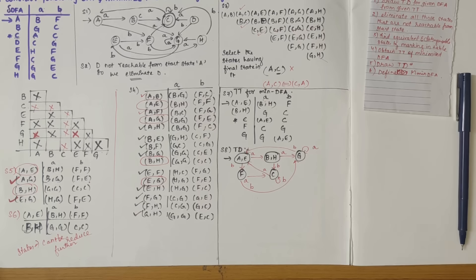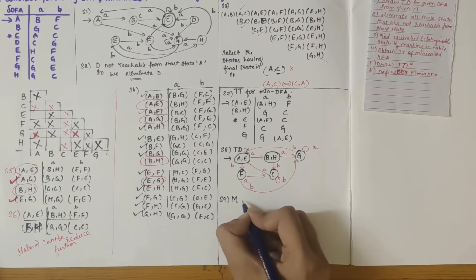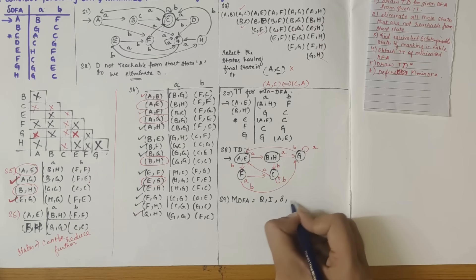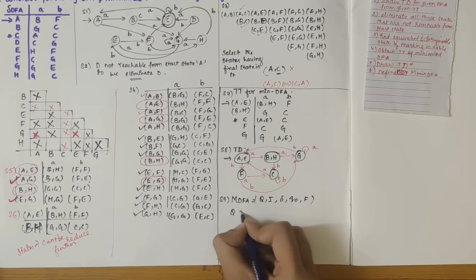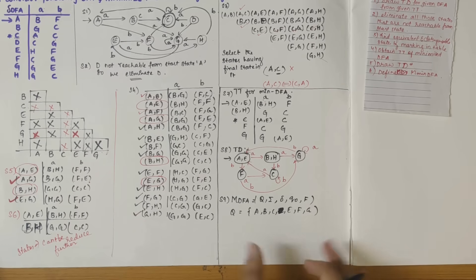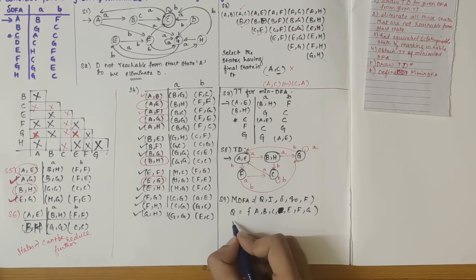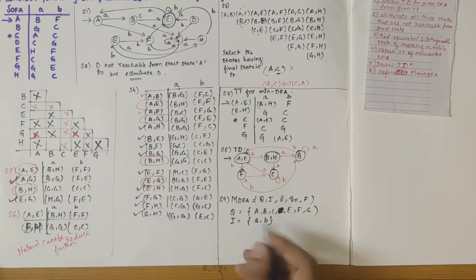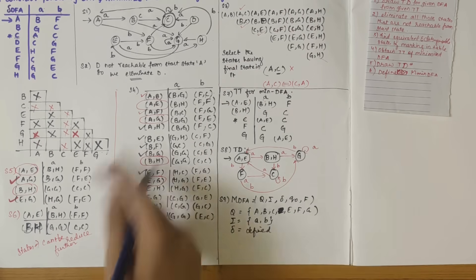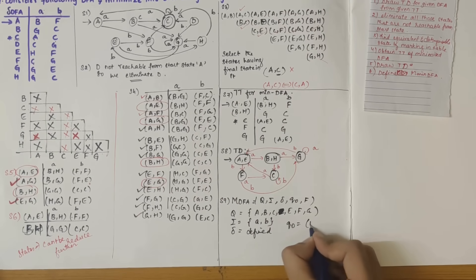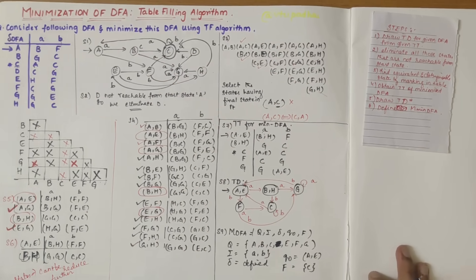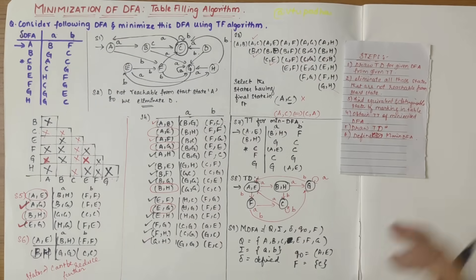We have minimized the given DFA as much as possible. The minimum DFA can be written as M = (Q, Σ, δ, q₀, F), where Q = {a-e, b-h, c, f, g} (excluding d), Σ = {a, b}, the transition function δ is defined in the steps above, the start state q₀ = a-e (since a and e are clubbed together), and the final state F = {c}.